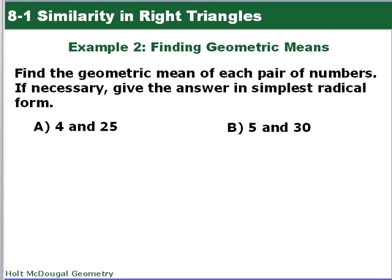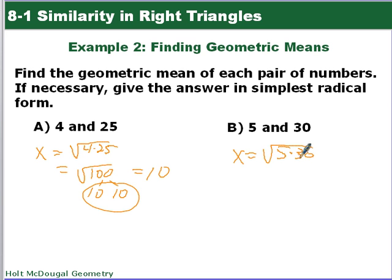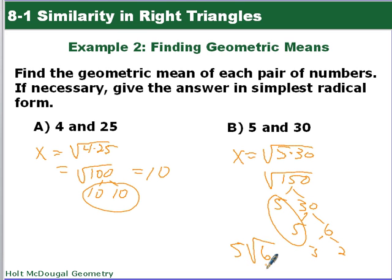All right, here's an example. Find the geometric mean of each pair of numbers. If necessary, give the answer in simplest radical form. The geometric mean is going to be the square root of 4 times 25, which equals the square root of 100. This is 10 times 10, I have a pair of 10s, so this equals 10. The geometric mean here is going to be the square root of 5 times 30, the square root of 150. I factor until I find a pair of the same number. I have a pair of 5s, I pull that out. This becomes 5 square root of 6. This is your geometric mean, and this is a geometric mean.